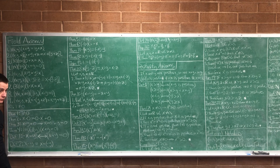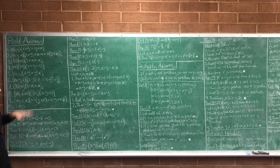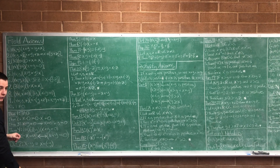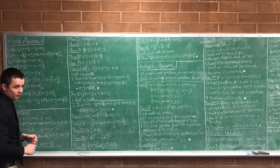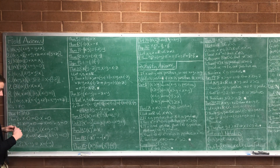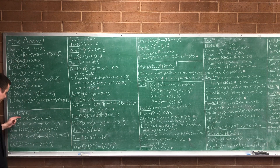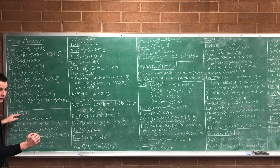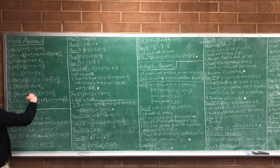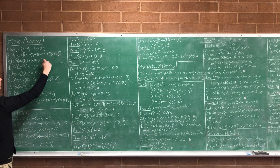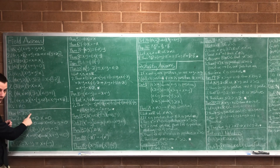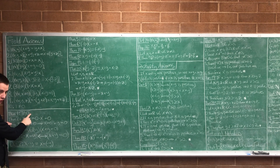We didn't prove those — those were our axioms. All the theorems are the things that we proved. So I listed out everything that we proved last time. The first thing we proved was there was one and only one zero element. We already knew that there was a zero element from our axiom, and then we proved that there's only one — so there's a unique one.